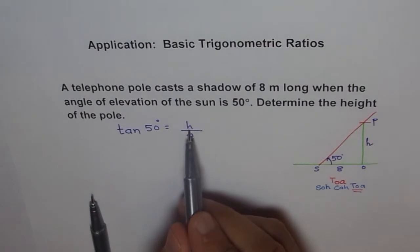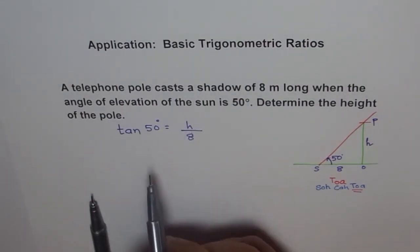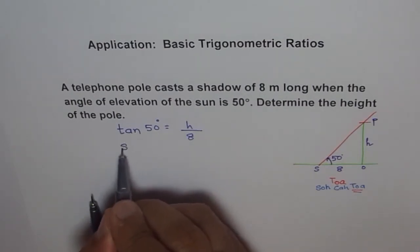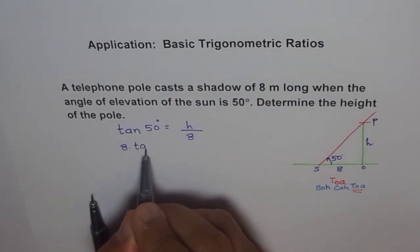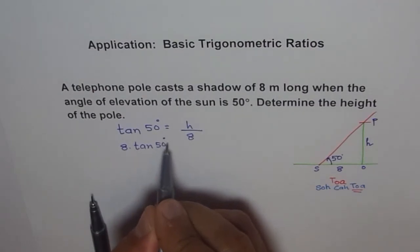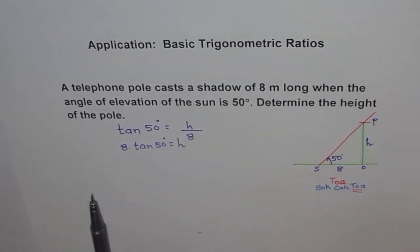From here, we can find the height. Height will be 8 times tan of 50 degrees. So h = 8 tan 50°. Using a calculator, 8 times tan of 50 degrees equals 9.534.